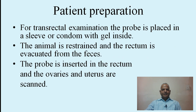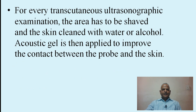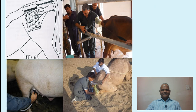For patient preparation for transrectal examination: the probe is placed in a sleeve or condom with gel inside; the animal is restrained and the rectum is evacuated of feces; the probe is inserted into the rectum and the ovaries and uterus are scanned. For every transcutaneous ultrasonographic examination, the area has to be shaved and the skin cleaned with water or alcohol; a coupling gel is applied to improve contact between the probe and the skin so no air appears in between.